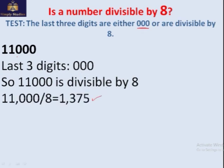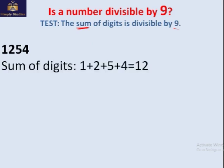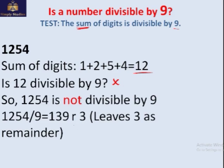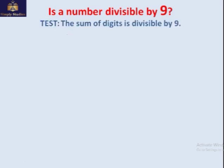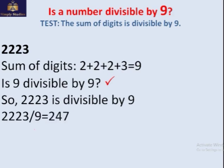The rule for 9 is similar to the rule for 3: if the sum of the digits is divisible by 9, then the number is also divisible by 9. For 1254: 1+2+5+4 = 12. Is 12 divisible by 9? No, so 1254 is not divisible by 9 — there's a remainder of 3. Another number: 22223 — 2+2+2+2+3 = 9, which is of course divisible by 9. So 22223 is also divisible by 9, and dividing it gives no remainder.